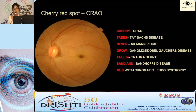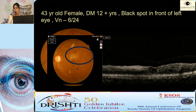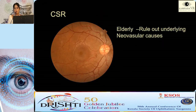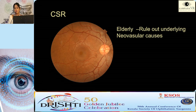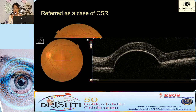Cherry red spot — remember the mnemonic. Here is another patient with whiteness at the posterior pole: don't assume it's a fibrotic scar — it may have a small retinal artery occlusion sitting there with vision totally disproportionate to the appearance. CSR mostly presents with blurring or distortion and we tend to miss it initially. In the elderly, rule out underlying neovascular causes. This case was referred as CSR but turned out to be a serous PED.